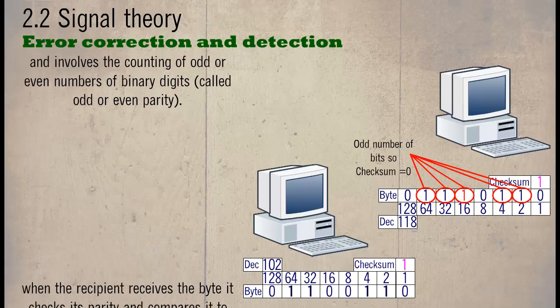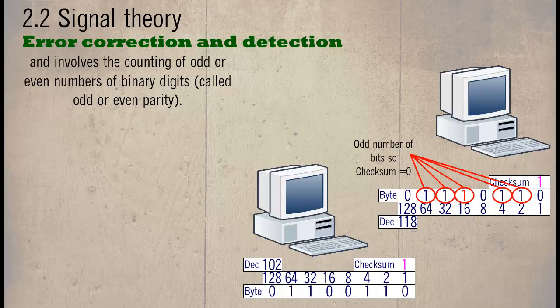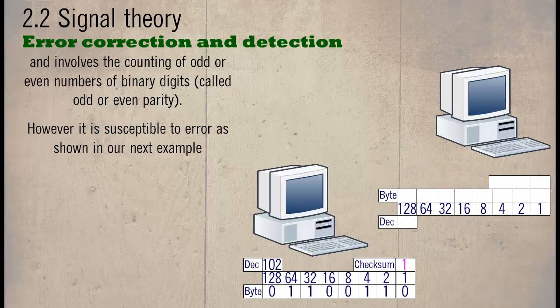Parity checking is very simple and involves the counting of odd or even numbers of binary digits, called odd or even parity. However, it is susceptible to errors, as shown in our next example.